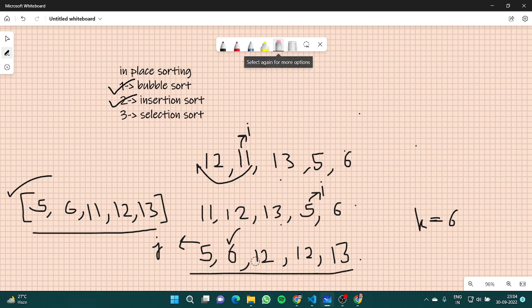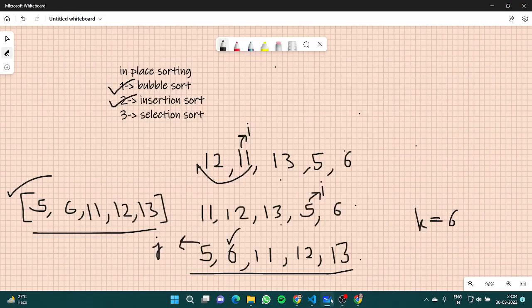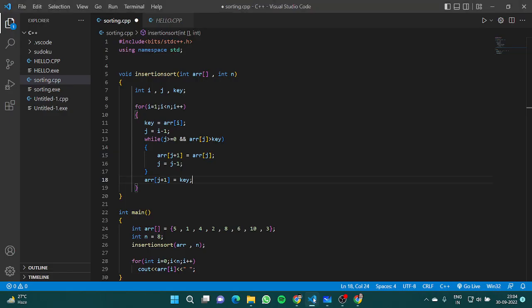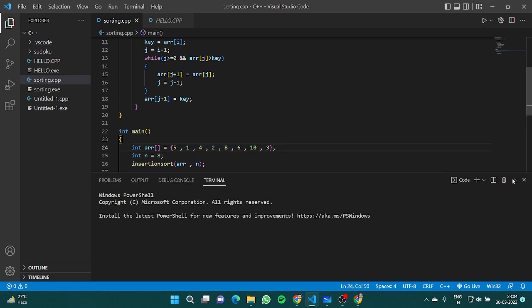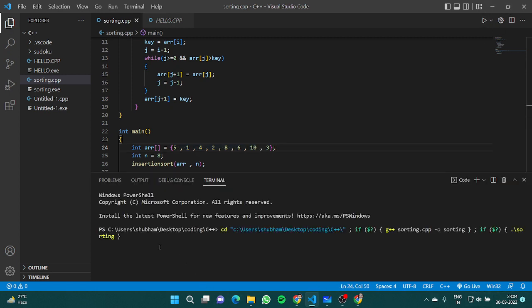By the way, this would be n. All right. So let's go here. We have array[j+1] equals key. Let's see if this gets sorted.